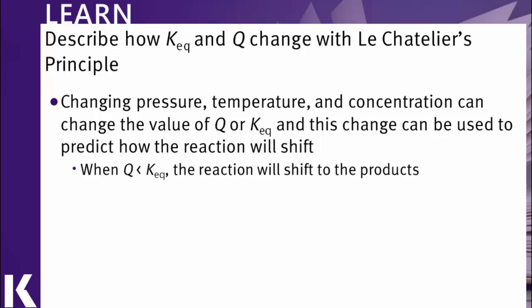If a reaction is at a point where Q is equal to K_eq, this means the reaction is at equilibrium. It means that the ratio of products to reactants is the same as it would be at equilibrium, so the reaction won't shift unless it is disturbed.